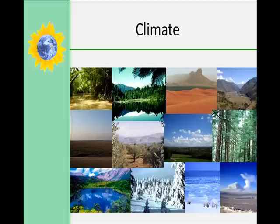Climate is considered the long-term — which means more than 30-year averages — of temperature, precipitation, winds, clouds, etc. in a region. A climate region is a large area that has similar conditions, and two main factors are used to describe the regional climate: temperature and precipitation.